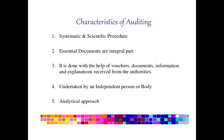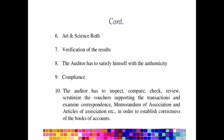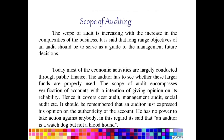Characteristics of auditing: it is a systematic and scientific procedure; essential documents are an integral part. It is done with the help of vouchers, documents, information, and explanations received from the authorities. It is undertaken by an independent person or body, following an analytical approach. It is both an art and a science. The auditor has to verify authenticity by checking, inspecting, comparing, and reviewing vouchers supporting transactions and examining correspondence.